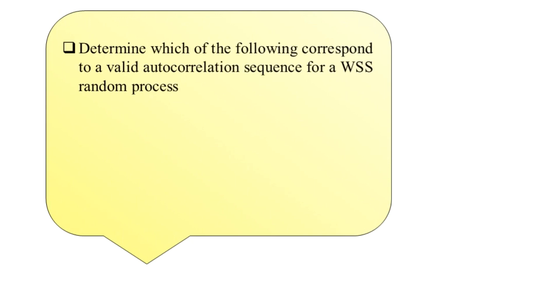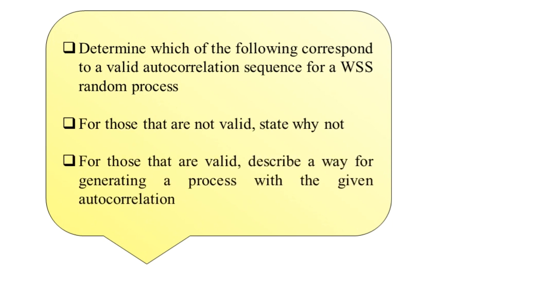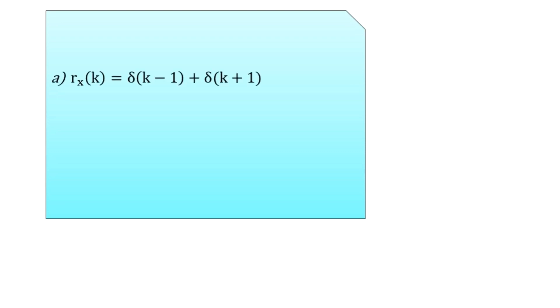The problem statement is: determine which of the following corresponds to a valid autocorrelation sequence for a WSS random process. For those that are not valid, state why not, and for those that are valid, describe a way for generating a process with the given autocorrelation. We have been provided with parts a through f as autocorrelation sequences.